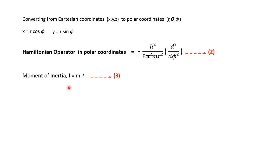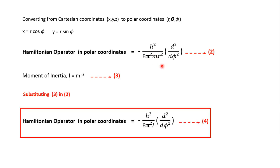For a particle moving in a circle, the moment of inertia is given by I = mr². In the Hamiltonian expression, instead of mr² we substitute I, the moment of inertia. The Hamiltonian operator in polar coordinates then becomes −h²/8π²I × d²/dφ². This is the Hamiltonian operator in polar coordinates for a particle in a ring.